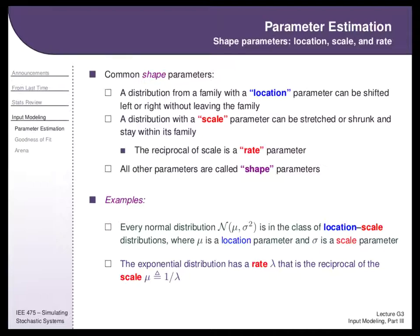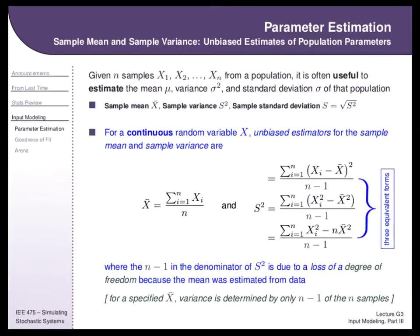A location parameter is like a generalized mean — it represents where a distribution sits. A scale parameter lets you stretch or tighten a distribution. In a family with a scale parameter, changing that parameter turns one member of the family into another. The terms rate and scale are reciprocals of each other: the exponential rate I've often mentioned, and the exponential scale is just one over that rate — which in the case of the exponential is simply its mean. The exponential is unusual in having only a single parameter; all other parameters are grouped into shape.